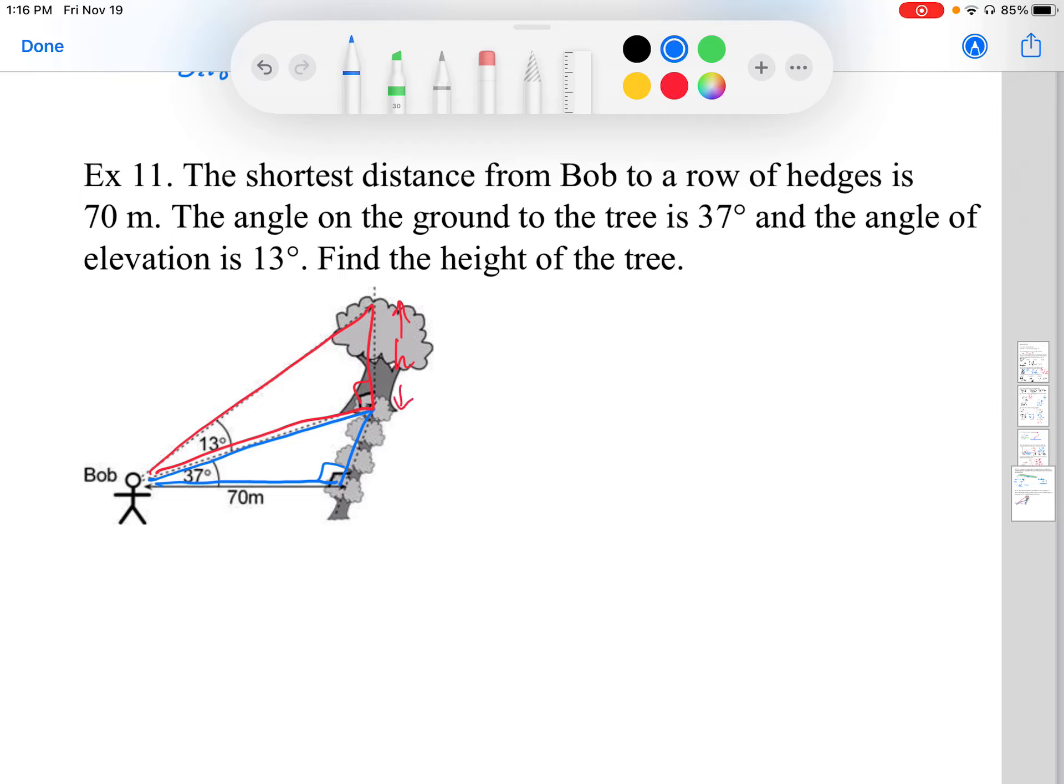So I'm going to work with the blue triangle first. The only common length between the two triangles is going to be the hypotenuse of the blue triangle, so I'm going to start with that. I'm going to draw my blue triangle in. This angle is 37 degrees.